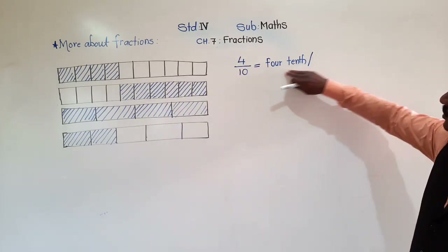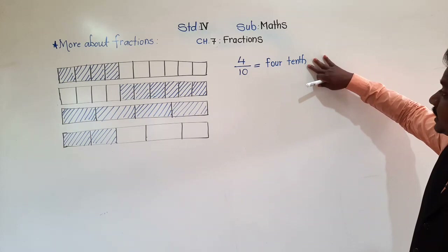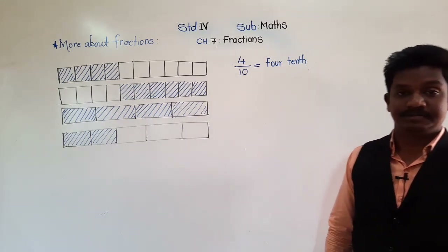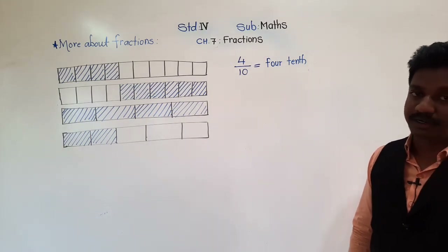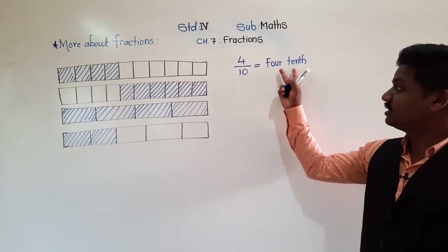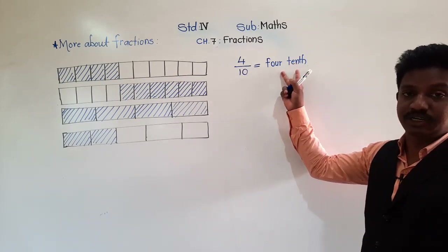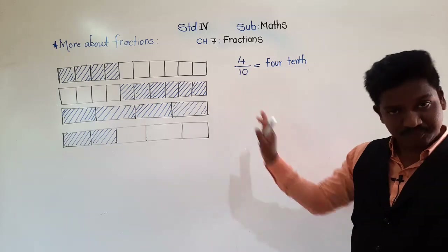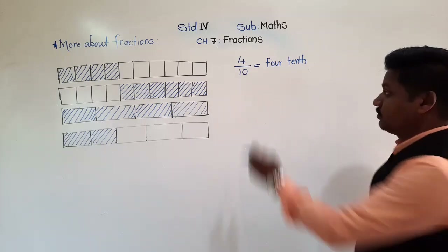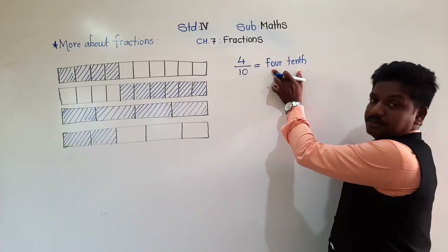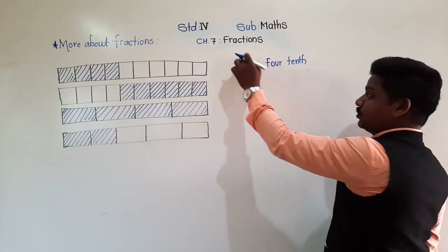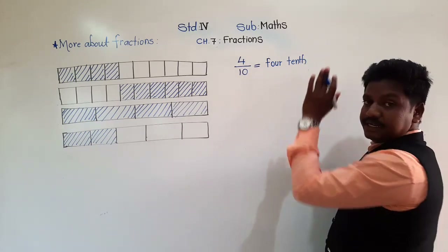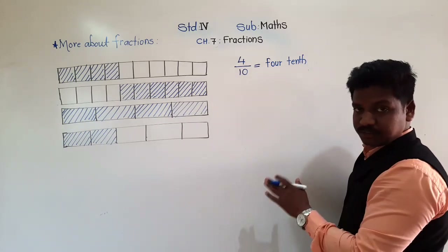The number which we have written in spelling is called the fractional number. How we read it — that is called the fractional number. And this form, 4 upon 10, is called the fraction. Fraction: 4 upon 10. And in spelling, '4 tenths' — that is the fractional number.